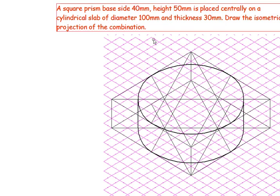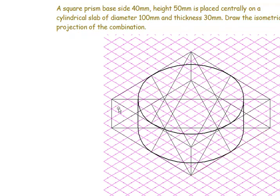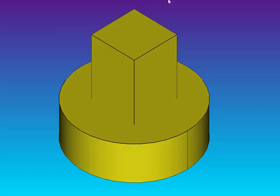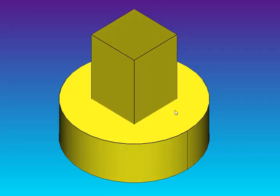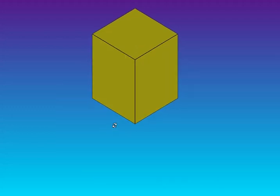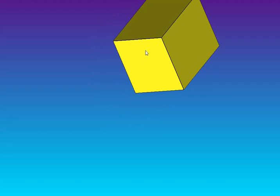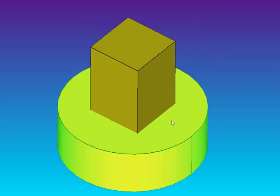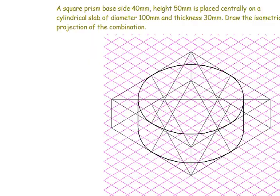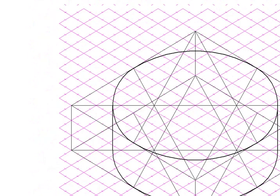Next I need to draw the square prism, which is placed exactly at the center. This is the horizontal surface on top of the cylinder. First I need to draw the top surface of the cylinder. I'll find the center of this cylinder, and from this center point I'm going to draw a 30-degree line on the top surface.